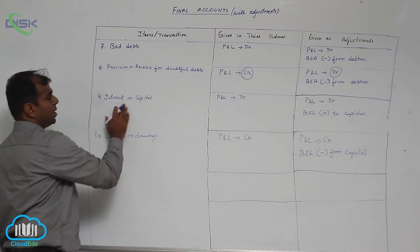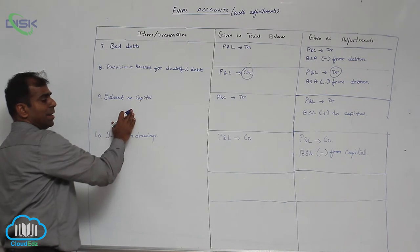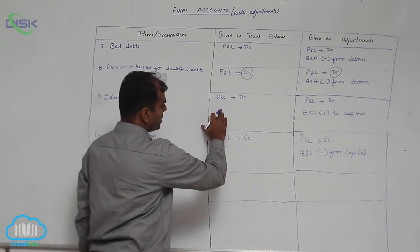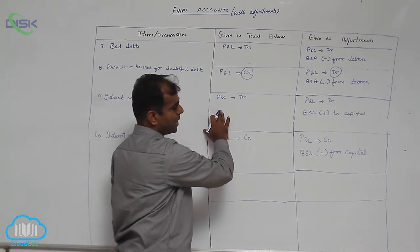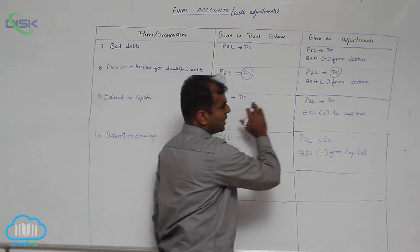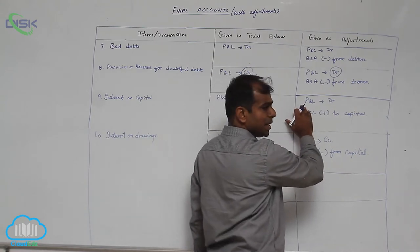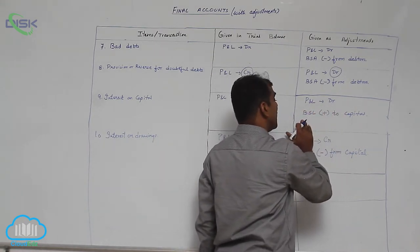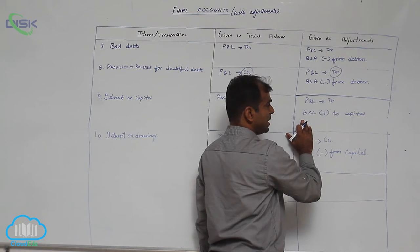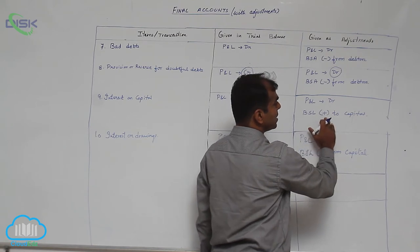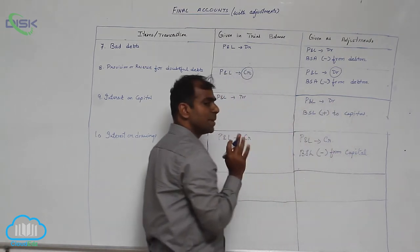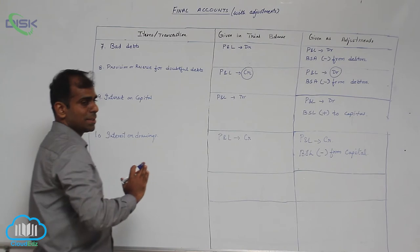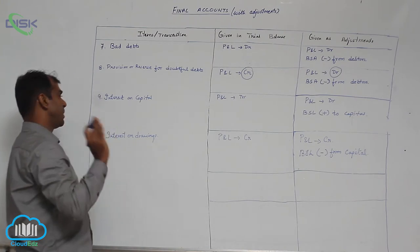Next, interest on capital. If it is given in the trial balance, take it in the P&L account debit side. If it is given in the adjustment, take the amount in the P&L debit side, and in the balance sheet add this amount to capital — because the entry is: interest on capital to capital account.